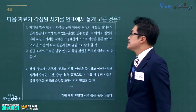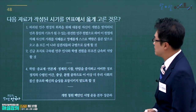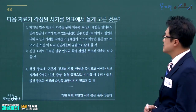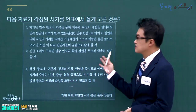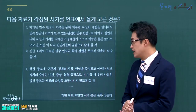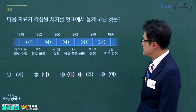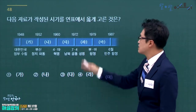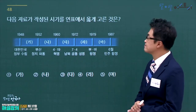긴급조치가 등장하는 시기는 유신체제 박정희 정부 때입니다. 7·4남북공동성명 이후 유신체제가 성립되었으므로, 연표에서 7·4남북공동성명 이후인 라 구간의 4번을 고르시면 됩니다.